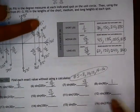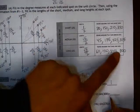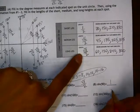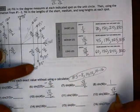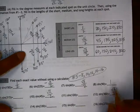Skipping to number 12, sine of 300. At 300, we have the longest leg, which is root 3 over 2. At 300, we're below the x-axis, so we want to make it a negative.